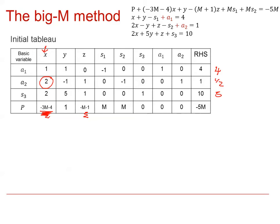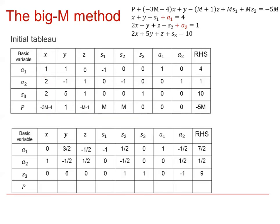Using this pivot element, we can now perform the first iteration. It might be worth pausing the video and having a go at this. The first three rows of the first iteration look as shown. Now filling in the final row: we need an operation to make the element minus 3m minus 4 become zero, using the new row 2. The operation is row 4 plus (3m plus 4) lots of the new row 2. For the x cell: minus 3m minus 4 plus 3m plus 4 equals 0.